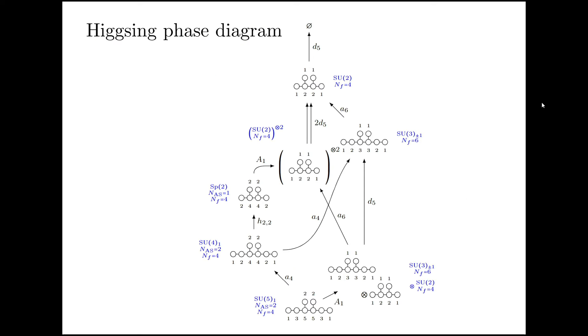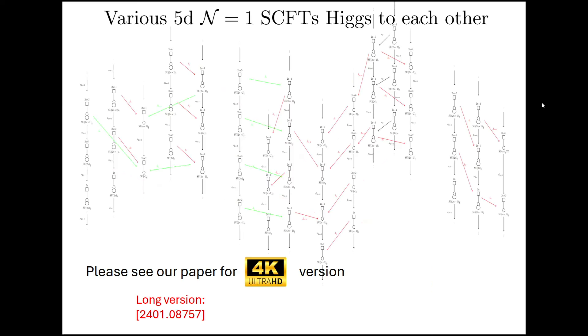I can keep on Higgsing it until I end up with a trivial theory and put everything in a nice phase diagram. I can also look at many different 5D N equals 1 SCFTs in the literature and see how they're related through non-trivial Higgsings. Of course, this diagram is a bit too small to see, but please visit the longer version of our paper for the 4K Ultra HD version.